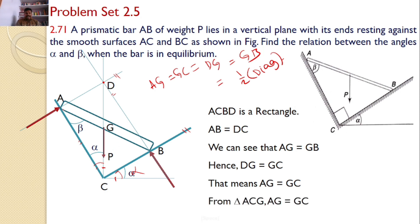Now you can consider the triangle ACG. In this triangle ACG, I understood that AG equals GC. What is the meaning? The meaning is that ACG is an isosceles triangle. The two angles must be the same.